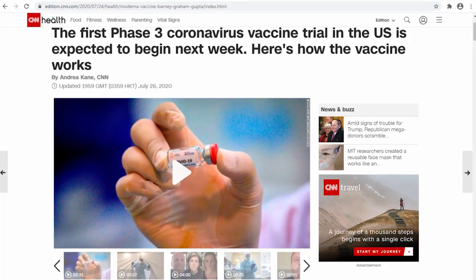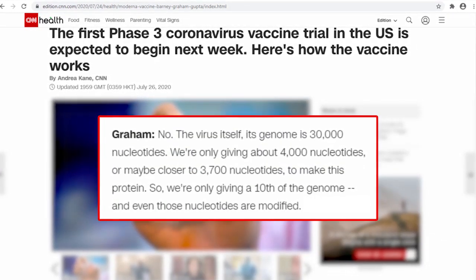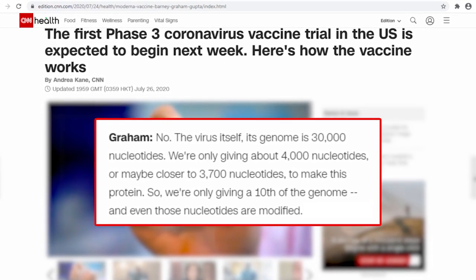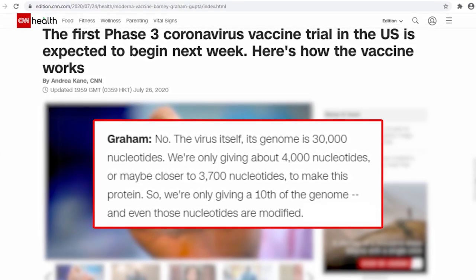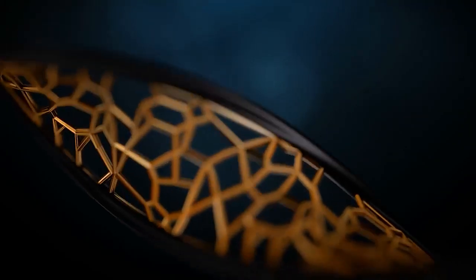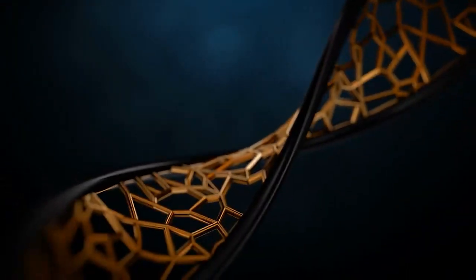According to CNN, SARS-CoV-2 features 30,000 nucleotides in its genome while the vaccine only features 3,700 to 4,000 nucleotides. This is the result of codon optimization where nucleotides are sequenced to give the viral protein.